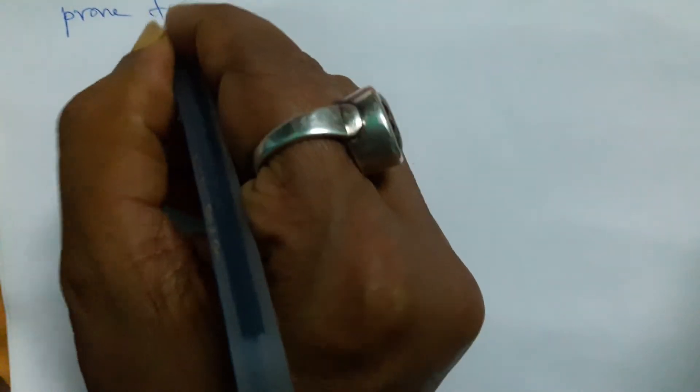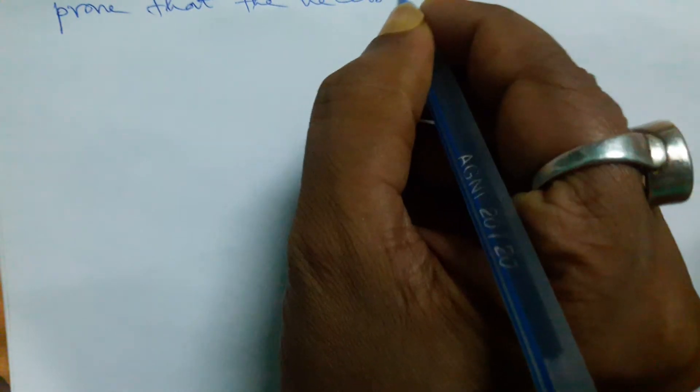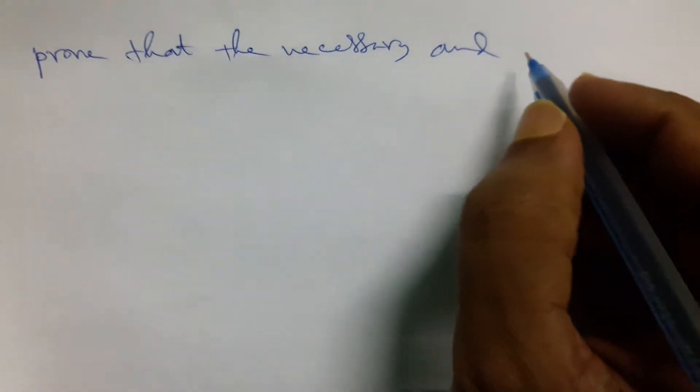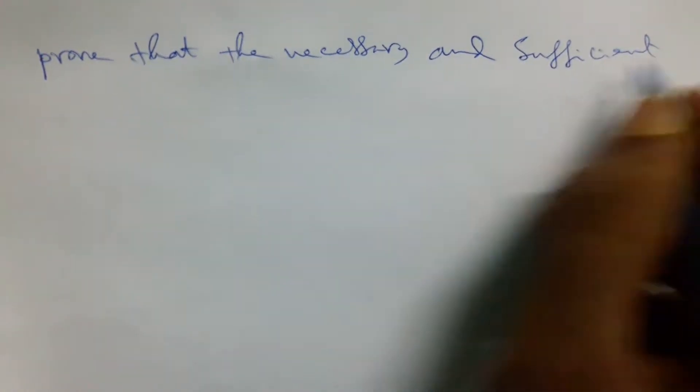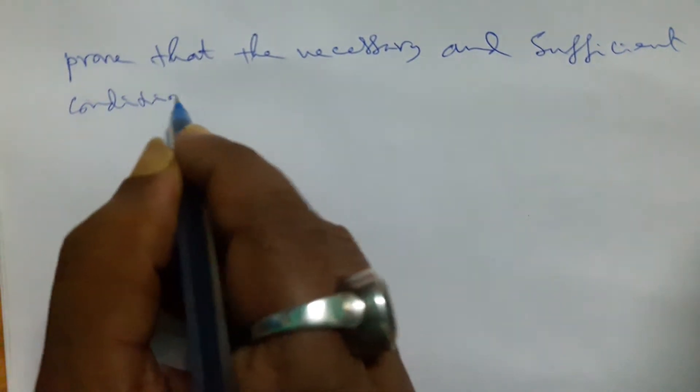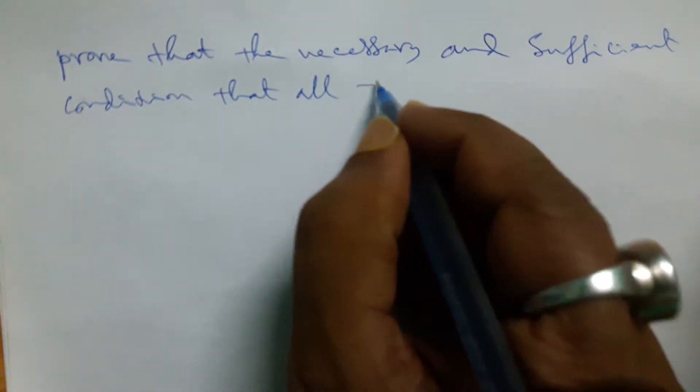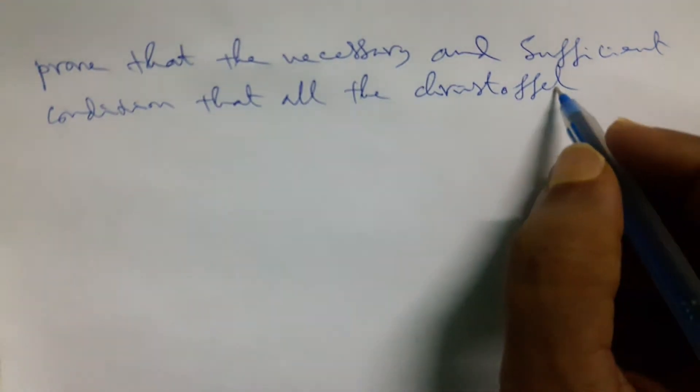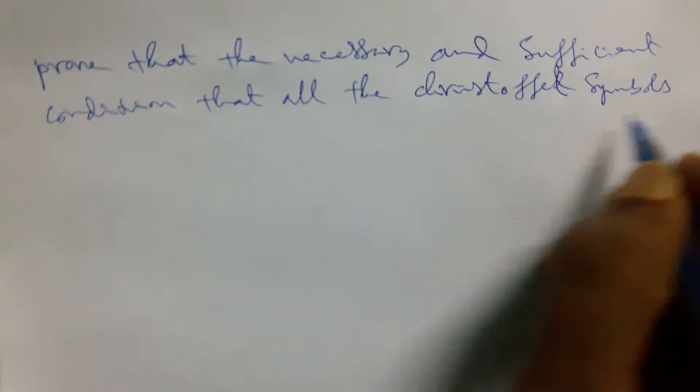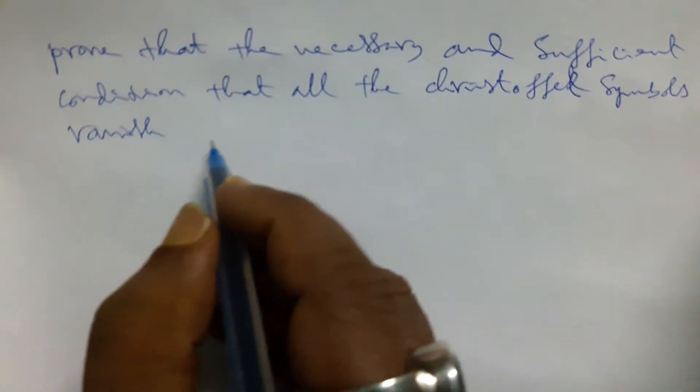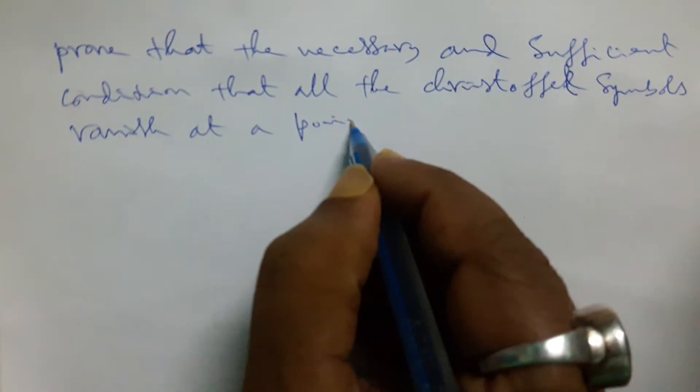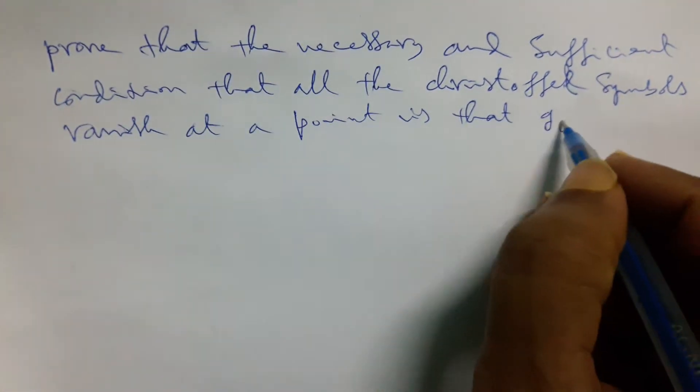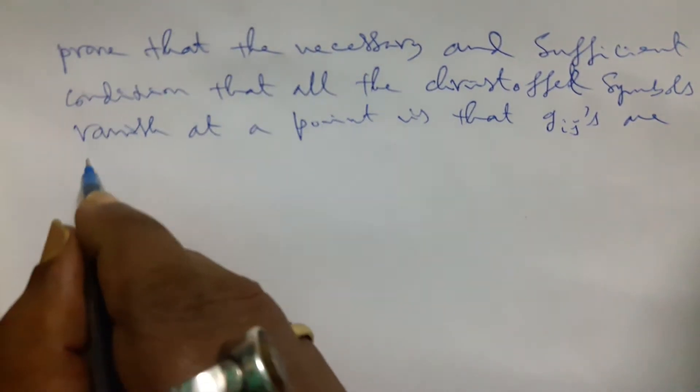Gijs are nothing but the coefficients. It's a mere terminology. But now we stated it, let's prove that the necessary and sufficient condition that all the Christoffel symbols vanish at a point is that Gijs are constants.